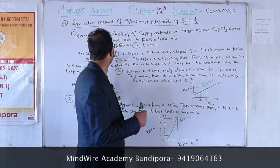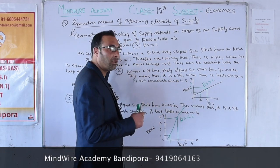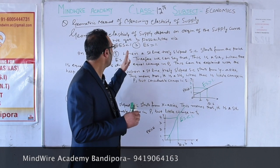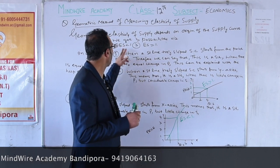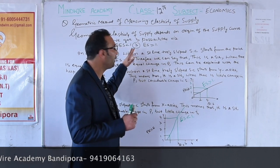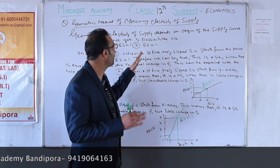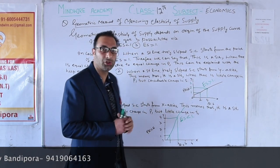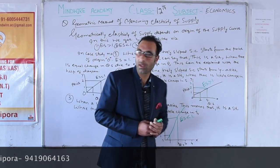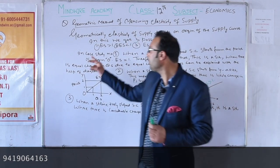We will have three possibilities. The first result is that the elasticity of supply is greater than 1, the second result is elasticity of supply is less than 1, and the third result is elasticity of supply is equal to 1.